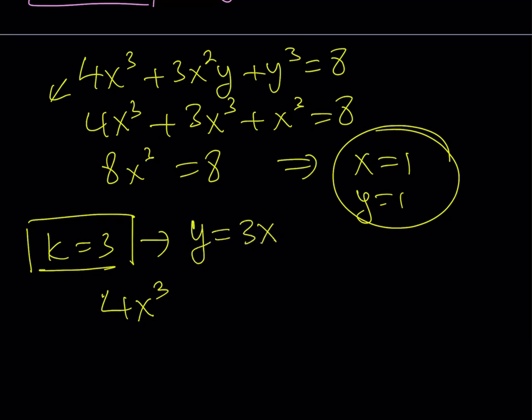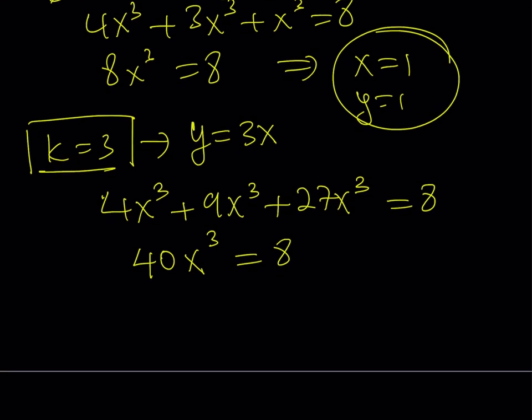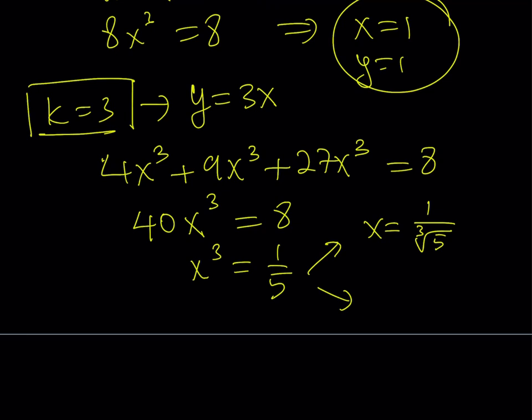We're going to substitute that into my first equation. That's going to give me 4x³ plus 3x² times 3x, that's going to be 9x³, plus y³. If you cube 3x, you're going to get 27x³. And this is equal to 8. 4 plus 9 is 13. 13 plus 27 is 40. So this gives me 40x³ equals 8. And from here, I get x³ equals 1/5 and x equals cube root of 1/5. So you can write it as 1 over cube root of 5. But the y value, since y is equal to 3x, I can just multiply x by 3 and get my y value. And this gives us another ordered pair as a solution.